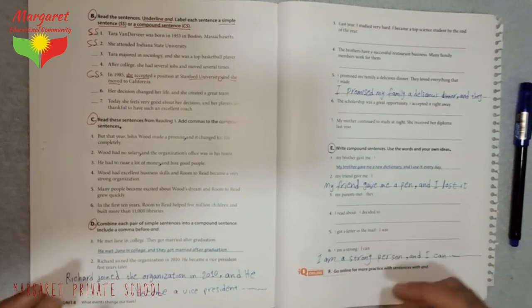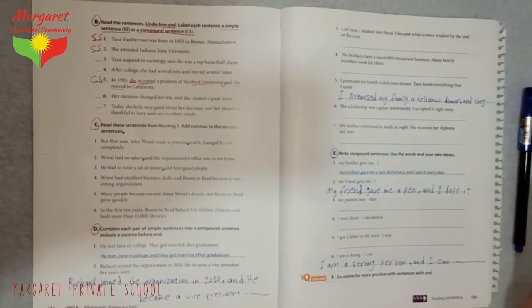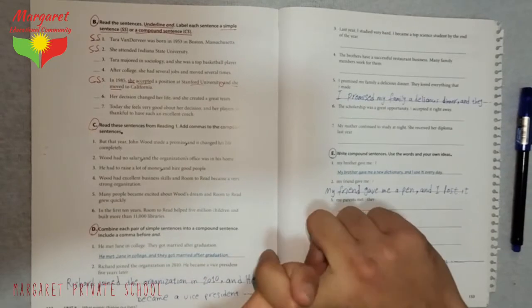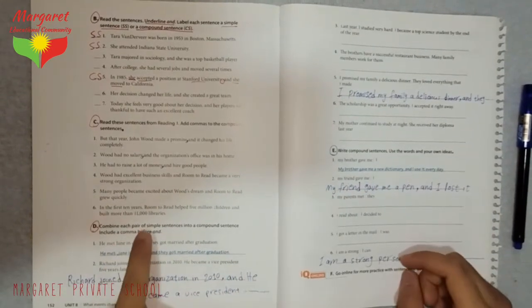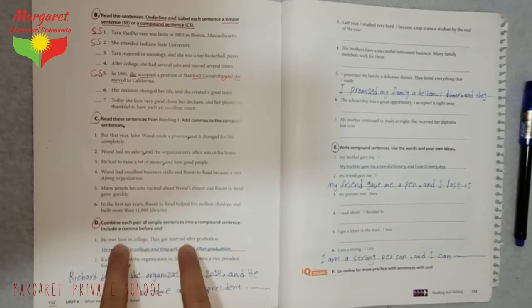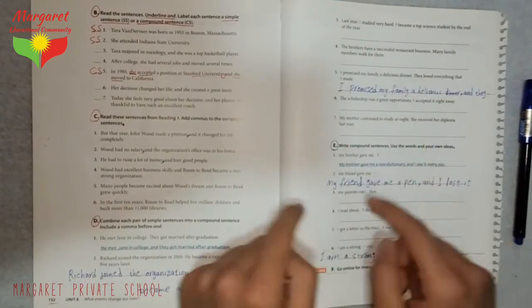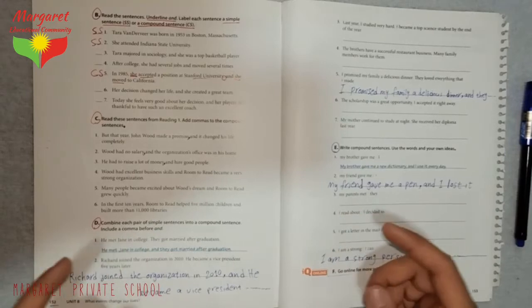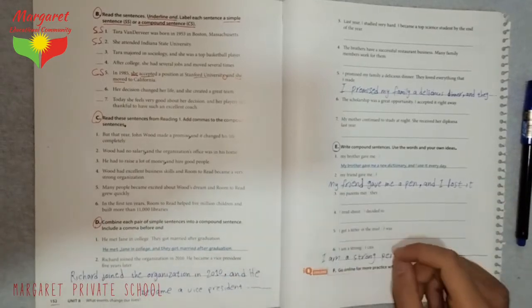In activity D, our job is to combine, to link them together, each pair of simple sentences into a compound sentence. We have two simple sentences in all of them. So, our job is to use 'and' to link them.